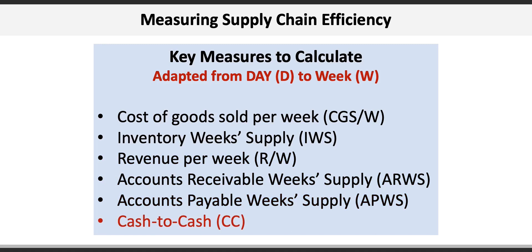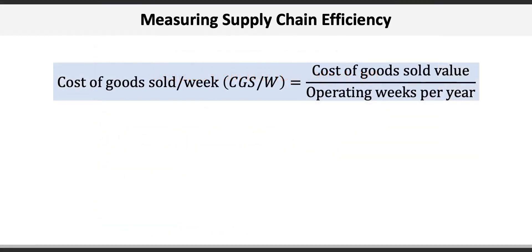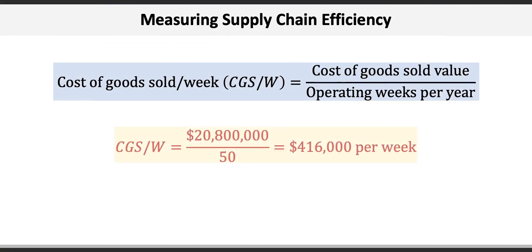Remember, we have converted these formulas from days to weeks. The cost of goods sold per week formula is the cost of goods sold value divided by the operating weeks per year. In this problem, the cost of goods sold is $20,800,000 and the business operates 50 weeks per year, so the cost of goods sold per week is $416,000.